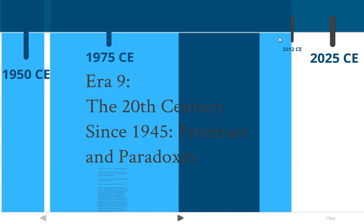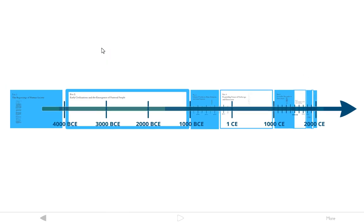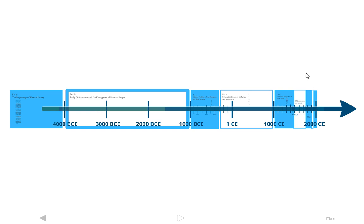Here we are in the present, 2012. Hopefully that gives you a good idea of the timeline and introduces you to the different eras we will be looking at. You'll notice there are some larger ones — the second era covers many thousands of years — and then we get into some smaller ones toward the end that only cover about 50 years.